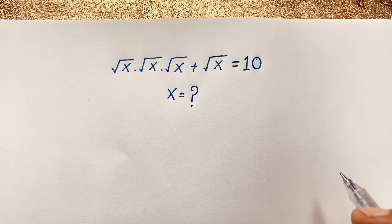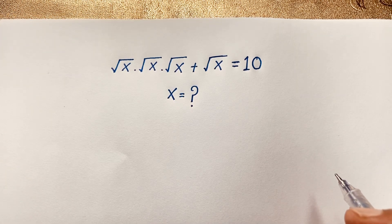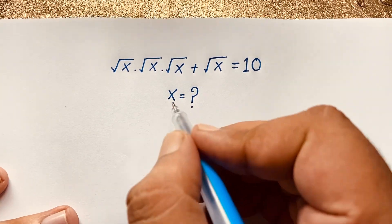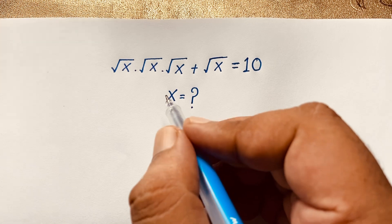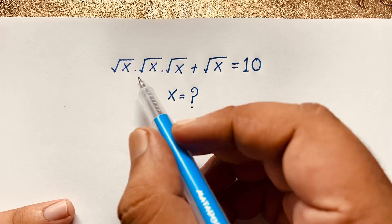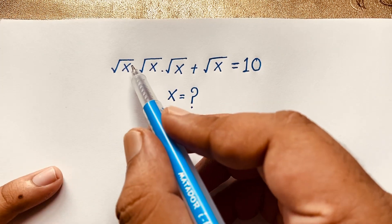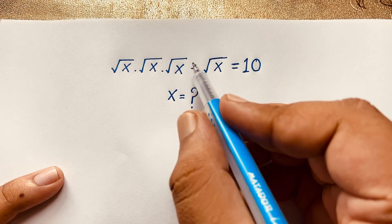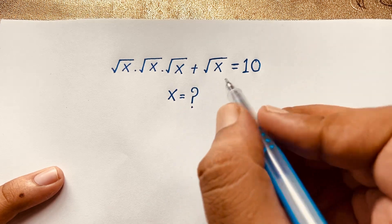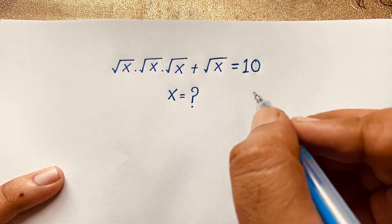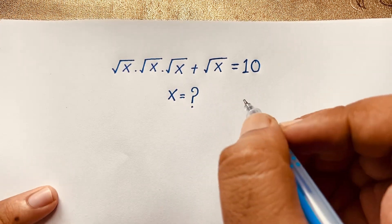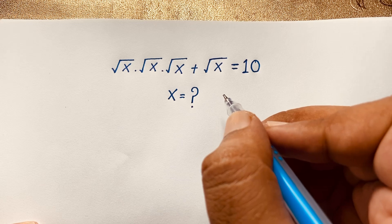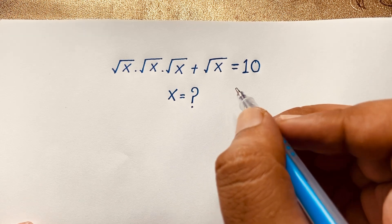Hello everyone, welcome to Rasha's Classroom. Today we have solved an interesting radical math question, a square root math problem. The question is: square root x times square root x times square root x, plus square root x, is equal to 10. x is equal to what? How to solve this interesting Math Olympiad question?